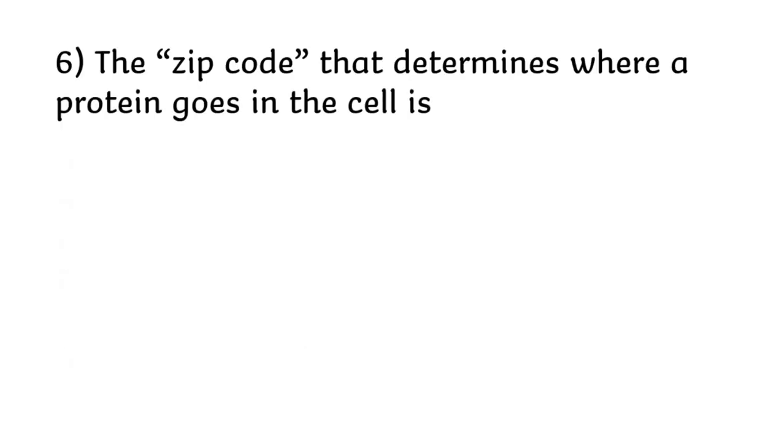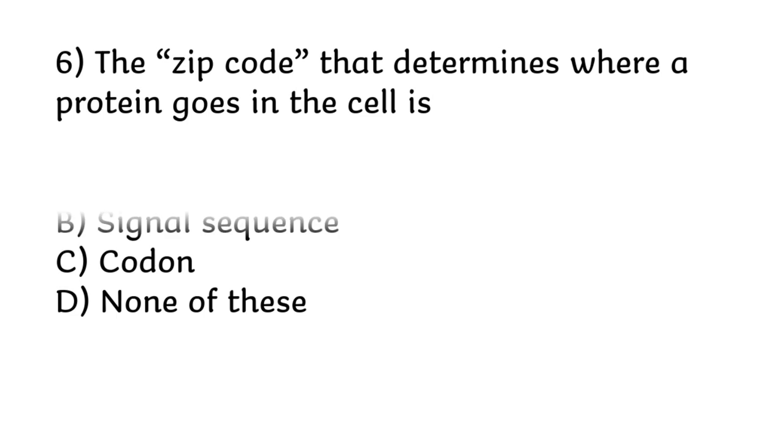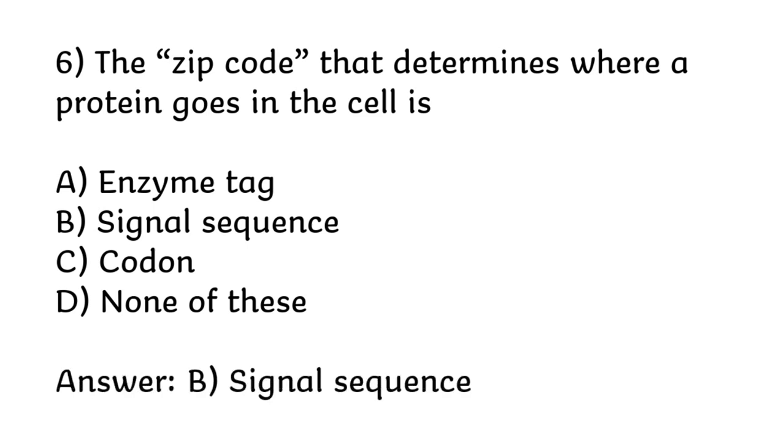The zip code that determines where a protein goes in the cell is: enzyme, tag, signal sequence, codon, or none of these. Correct answer is option B, signal sequence.